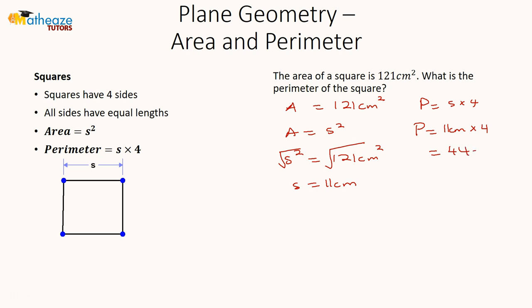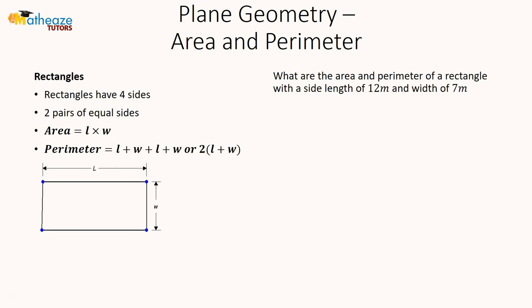Now let's look at rectangles. A rectangle has four sides with two pairs of equal sides. The area is length times width, and the perimeter is the sum of all sides — two lengths and two widths added together.